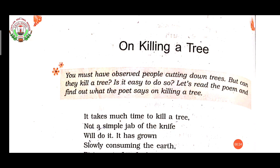As I told you, the poem is a graphic picture of man's cruelty towards the tree, which symbolizes nature. Here the poet gives step-by-step instructions on how to kill a tree, and makes us realize that killing a tree is just like murdering a human being. It also refers to the destructive nature of humans and the indestructibility of nature.